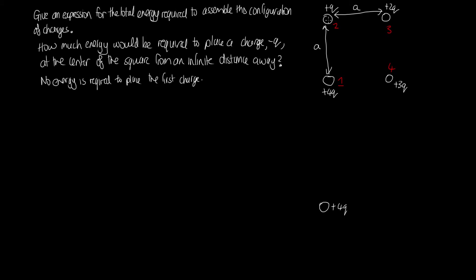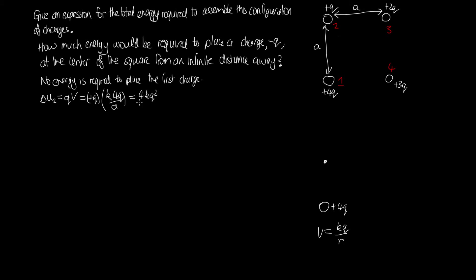Now we're going to place the second charge, which is plus q, at distance a above the first charge. The change in energy U₂ — for placing the second charge — is given by the charge being placed times the voltage at that point: U₂ = qV. The charge is plus q, and the voltage due to the first charge (4q) at distance a is k·4q/a. So this gives us U₂ = 4kq²/a.